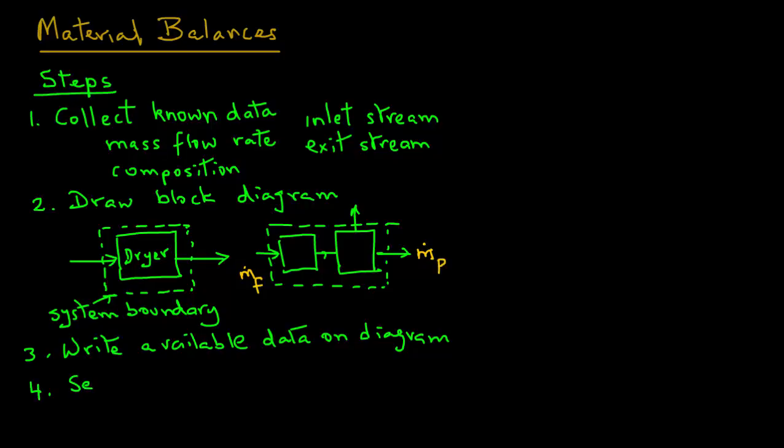And four, we select a suitable basis for the calculations. Now, the basis can be in terms of mass or it could be time. For example, we may be interested in finding out the material balance that is conducted for one hour of operation. Or it may be based on, for example, one kilogram of the inlet product stream. Again, this will become clear when we look at an example. The selection of this basis is usually done to make the calculations more convenient.